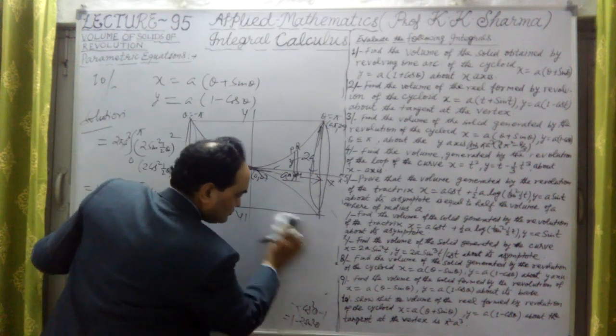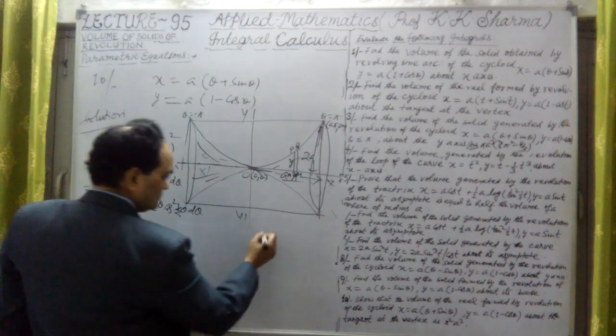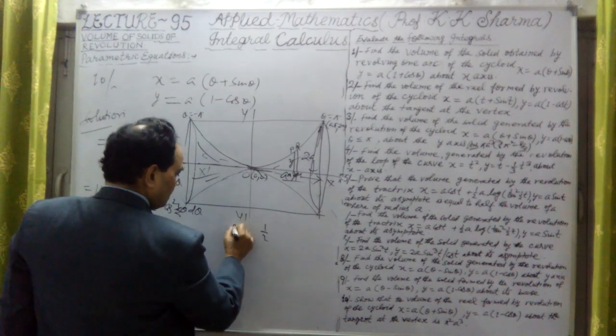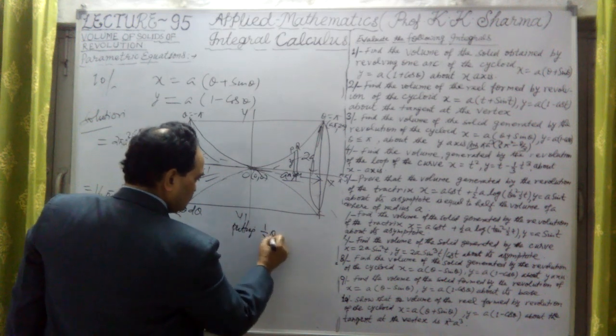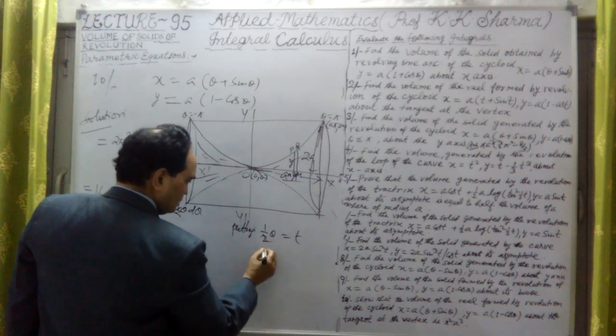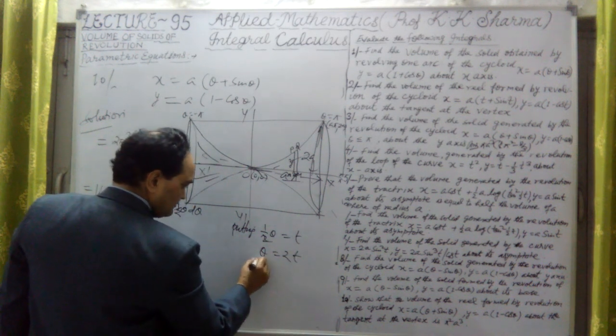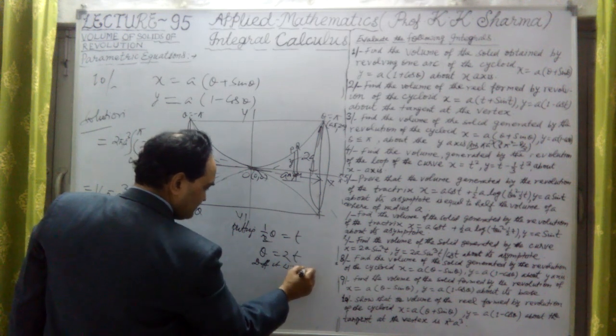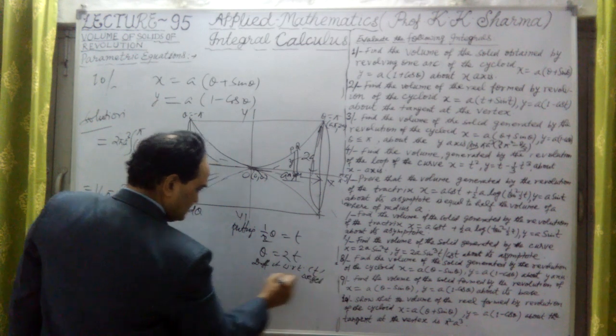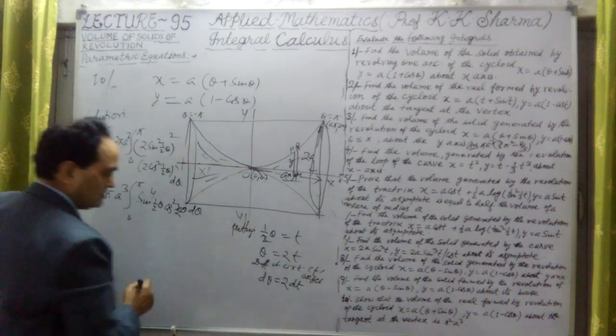Substitute 1/2 theta equal to t. Let's put here that 1/2 theta equal to t, or theta is equal to 2t. Differentiating it with respect to t, so we get d theta is equal to 2 dt.